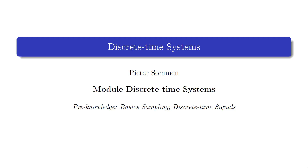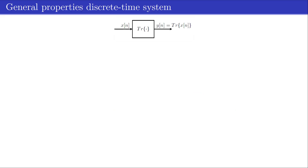Welcome to this video in which we introduce the concept of processing a discrete time signal by a discrete time system and the classification of such systems. A discrete time system, as denoted in the figure, is a mathematical operator or mapping that transforms one signal, the input xn, into another signal, the output yn, by means of a fixed set of rules or operations.